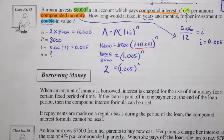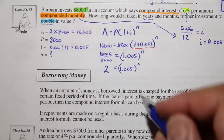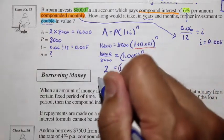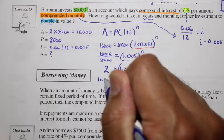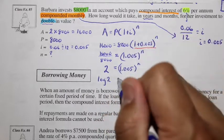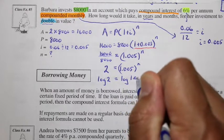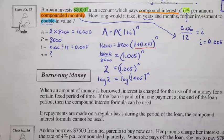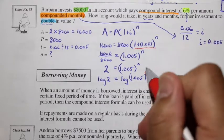And now let's use our algebra of logs to help us determine our n value. And so here, we're going to take the log of both sides. Log of 2 is equal to log of 1.005 to the exponent n.